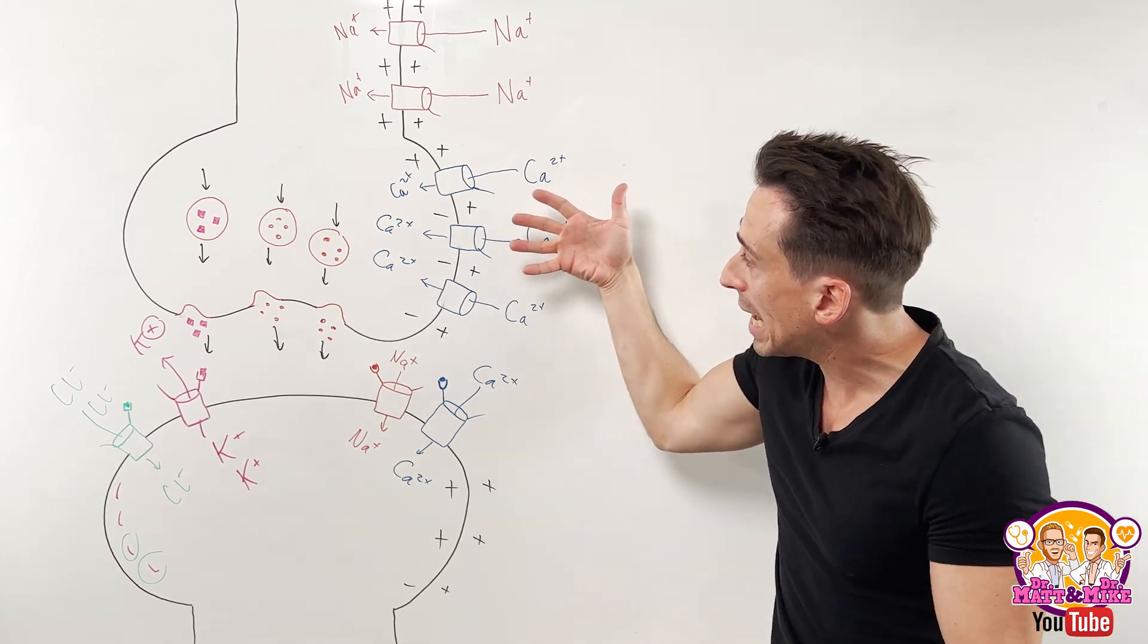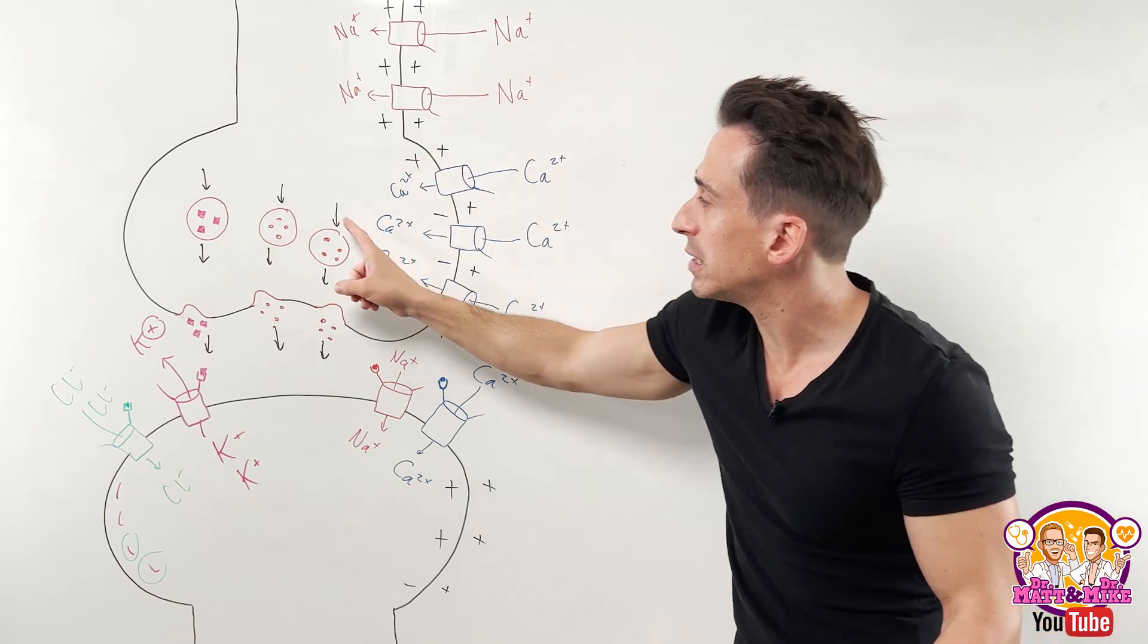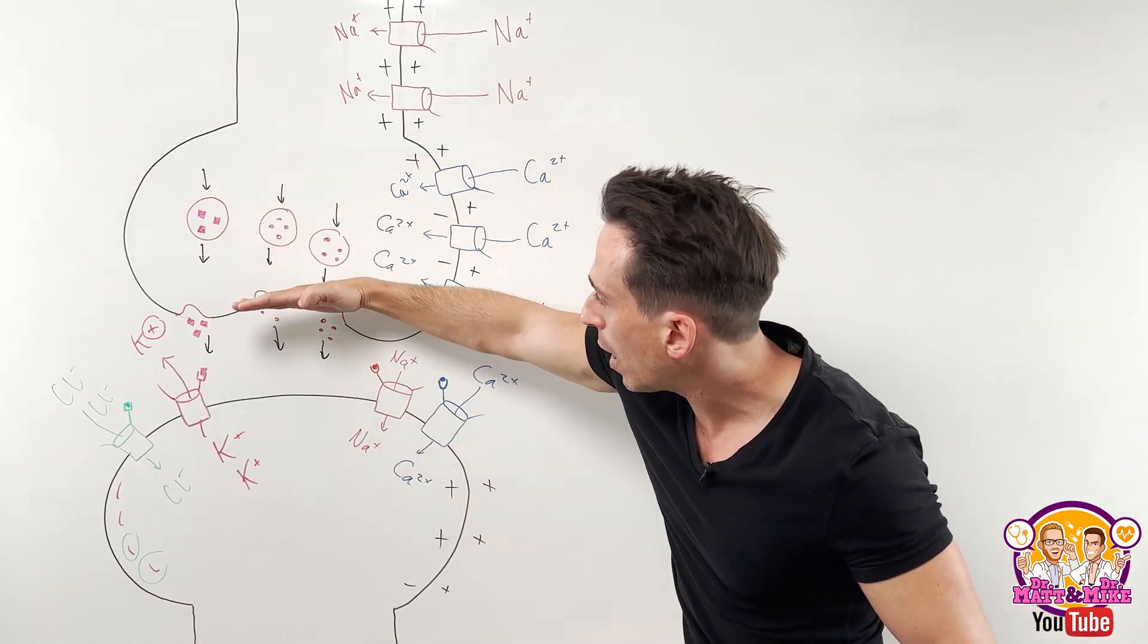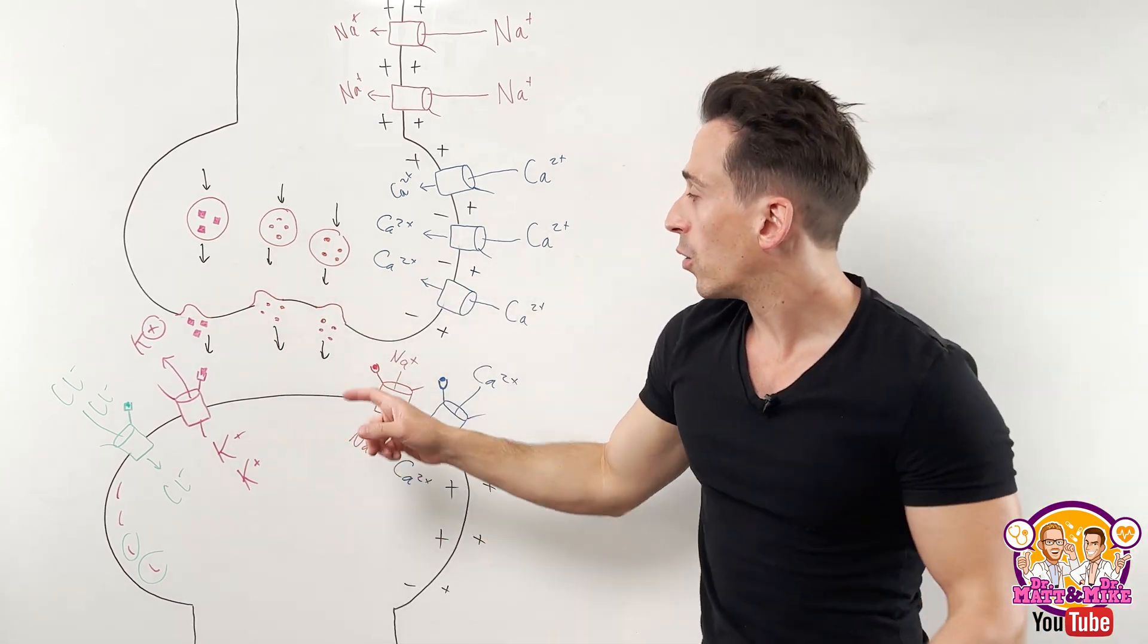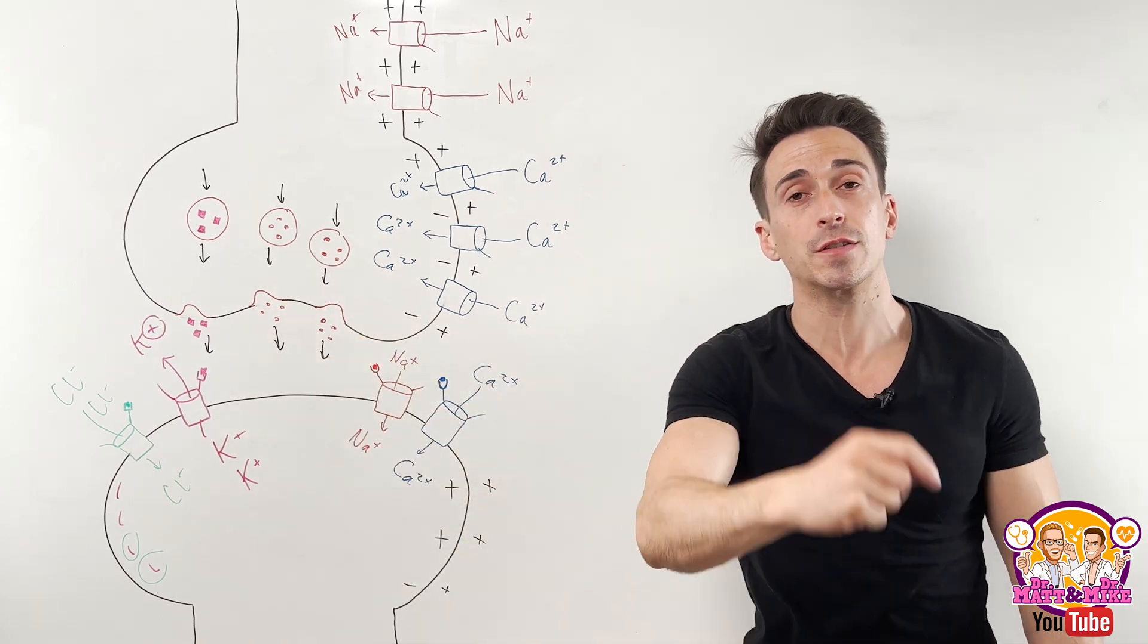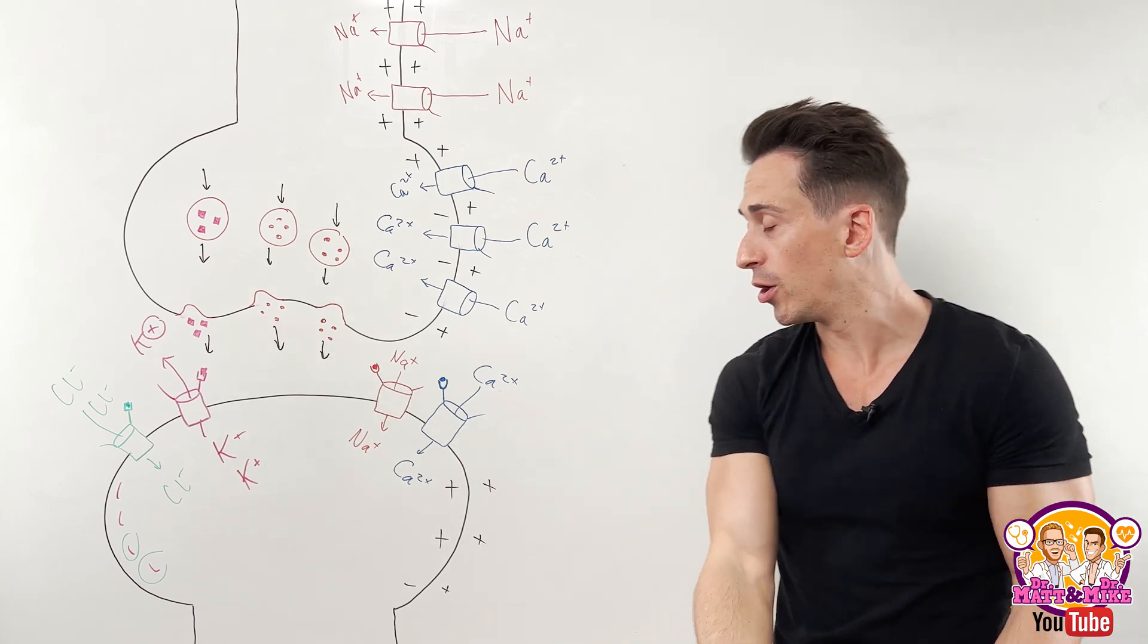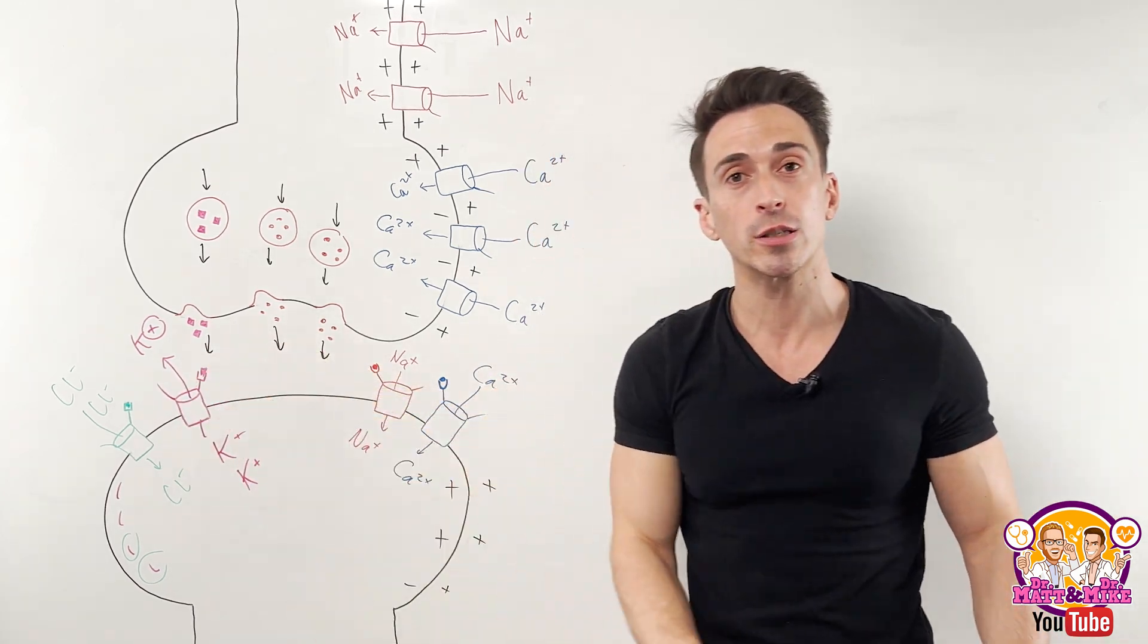The calcium will diffuse in down its concentration gradient and once inside, the calcium tells these vesicles filled with neurotransmitters to bind with the cell membrane, releasing all the neurotransmitters inside and they will diffuse across the synaptic cleft.